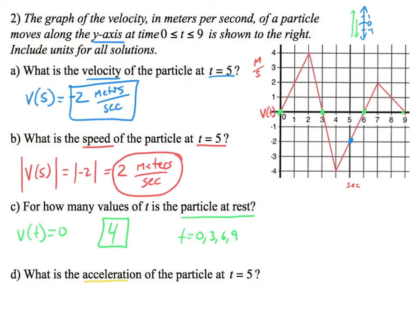Lastly, we want the acceleration at t=5. The acceleration at 5 is really the derivative of velocity at 5, which means the slope at t=5. The tangent line slope there goes up 2 over 1. So that would be 2 meters per second squared, or meters per second per second.